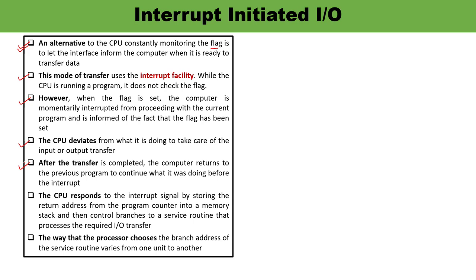Whenever the CPU is responding to an interrupt signal, it always stores the return address from the program counter into the memory stack. Then it branches to the Interrupt Service Routine wherever there is a requirement to perform the I/O transfer. There are various techniques via which the branch address of the Interrupt Service Routine can be handled, and it may vary from unit to unit.